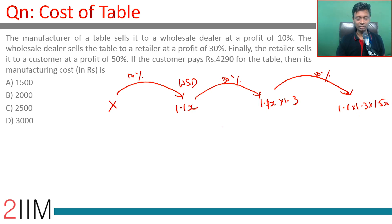The customer pays 4290. So 1.1 into 1.3 into 1.5x is 4290. That's 11 by 10 into 13 by 10 into 3 by 2 equals 4290.